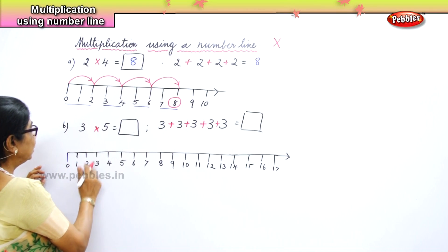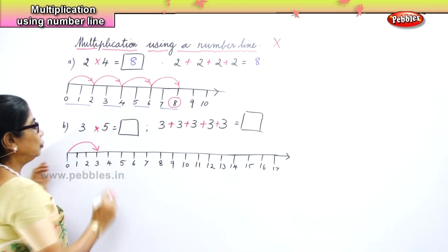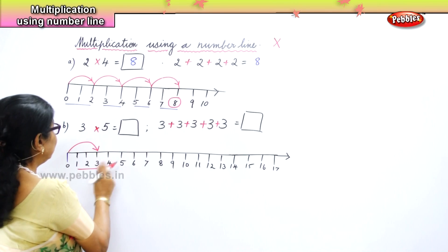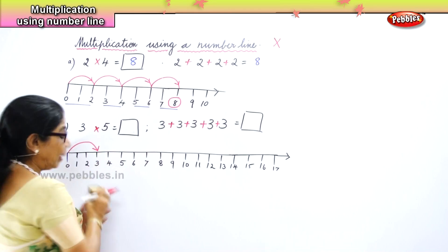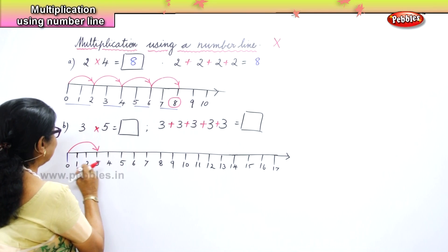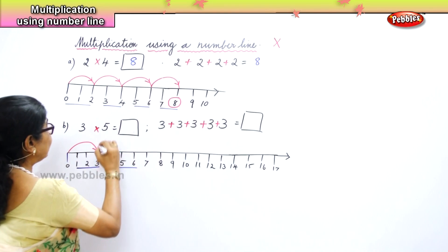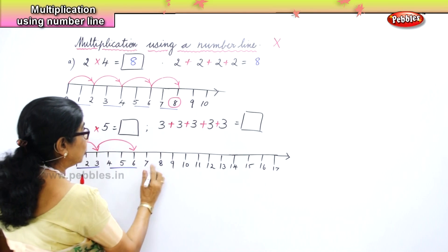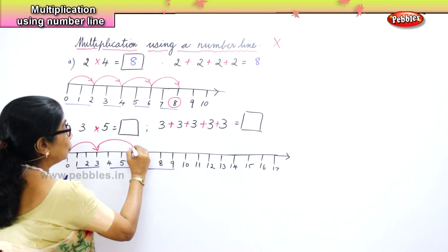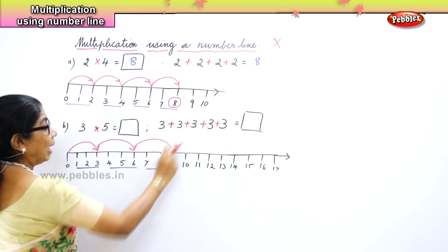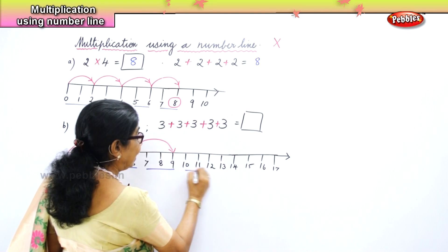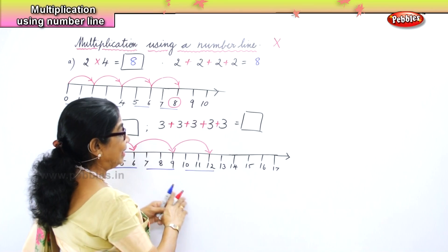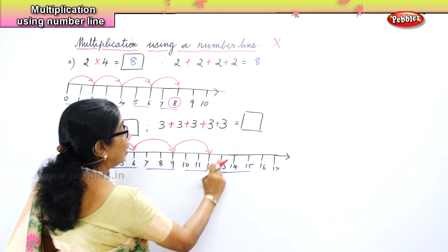Begin from zero. One, two, three — that's the first step, you jumped three. Then you take another three: one, two, three. Then jump another three: one, two, three — from three to six. The third jump: one, two, three — from six to nine. The fourth jump: one, two, three — from nine to twelve. And the last three: one, two, three — from twelve to fifteen.